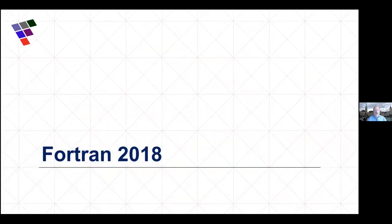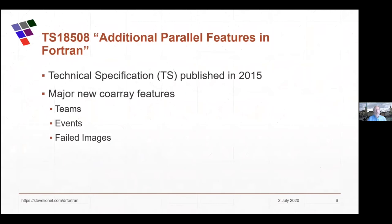A little bit first about Fortran 2018, the current standard. The major additions were two technical specifications published earlier. When we have a collection of features ready to be implemented, we create a TS — a technical specification — publish it, and encourage compiler writers to start implementing those features. The first TS for Fortran 2018 was the coarray TS, adding parallel features: specifically teams, events, and failed images — additional coarray features over what was in Fortran 2008.